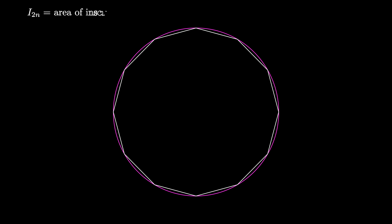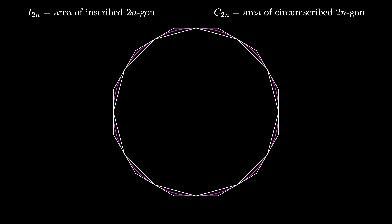Consider a circle of radius 1. Draw an inscribed regular 2n-gon, and let i sub 2n be the area of this inscribed 2n-gon. Next, draw a circumscribed regular 2n-gon, and let c sub 2n be the area of this 2n-gon.